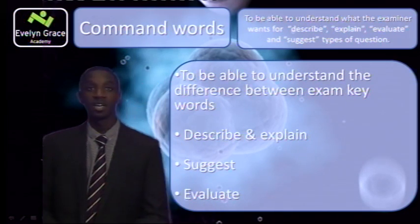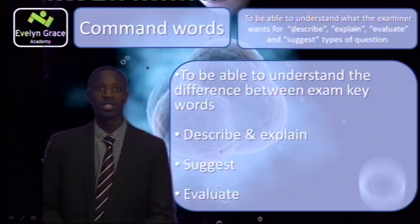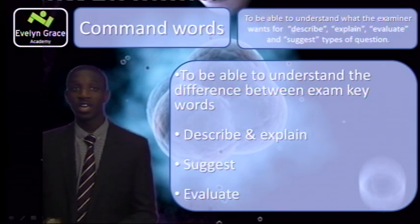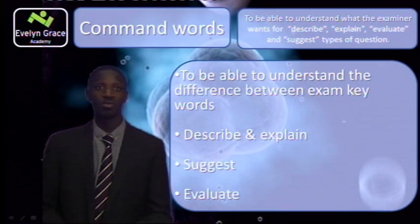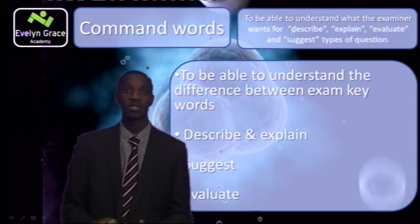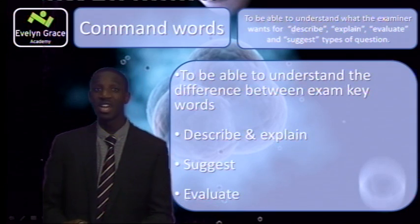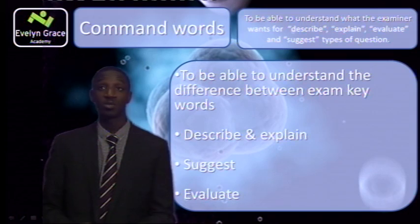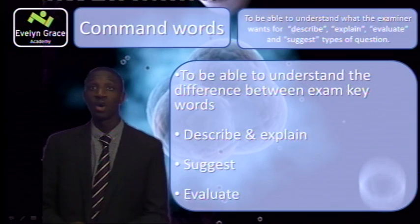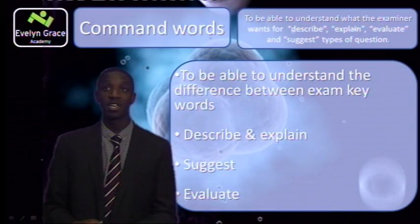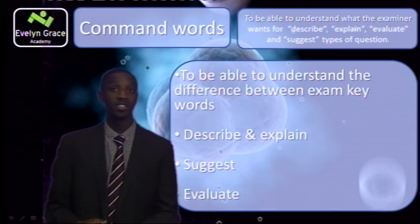Good afternoon. I'm Mr. Antti and today I'll be telling you how you convert that A to an A-star in science. In terms of an A and an A-star, there isn't much in terms of marks. It may be that you've dropped marks because you've misunderstood what the examiner wants from you. So today we'll be talking about exam command words, and by the end I hope you'll understand what the examiner means when he wants you to describe, explain, evaluate and suggest.